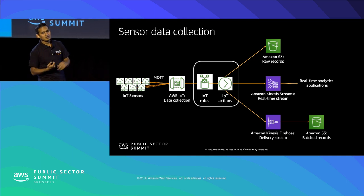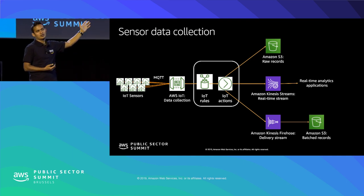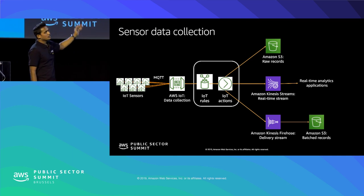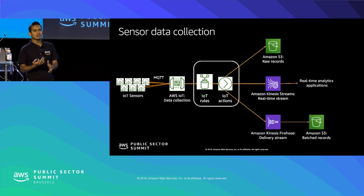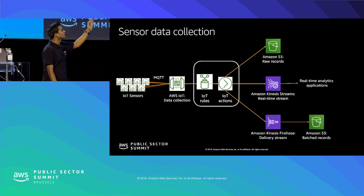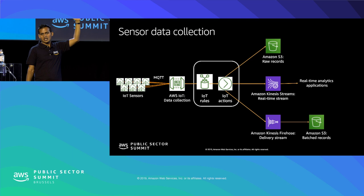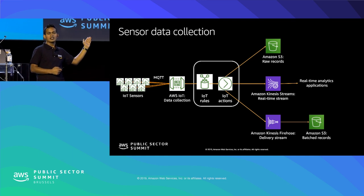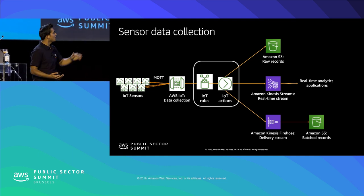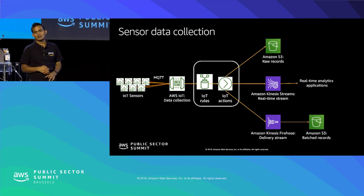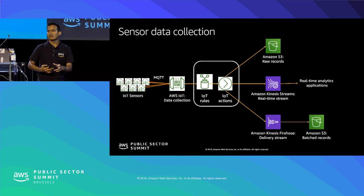An IoT stream processing example: a large set of IoT sensors send data to the IoT gateway, which forwards it to IoT Rules. Based on defined rules, multiple actions can be triggered simultaneously — writing directly to S3, sending to Kinesis Analytics for real-time analytics, or sending to Kinesis Firehose which dumps data to S3, with optional Lambda-based transformation applied during the Firehose delivery.